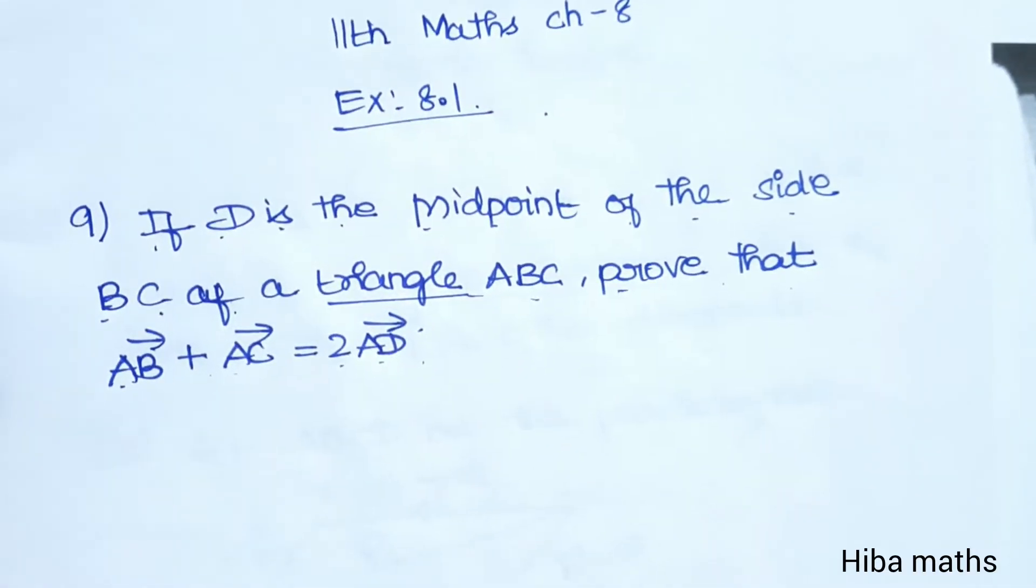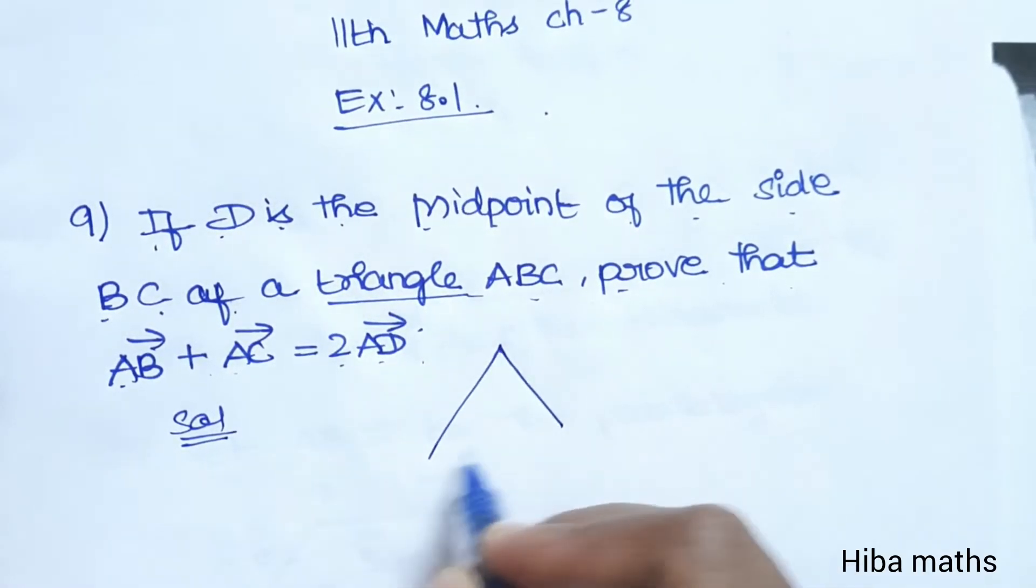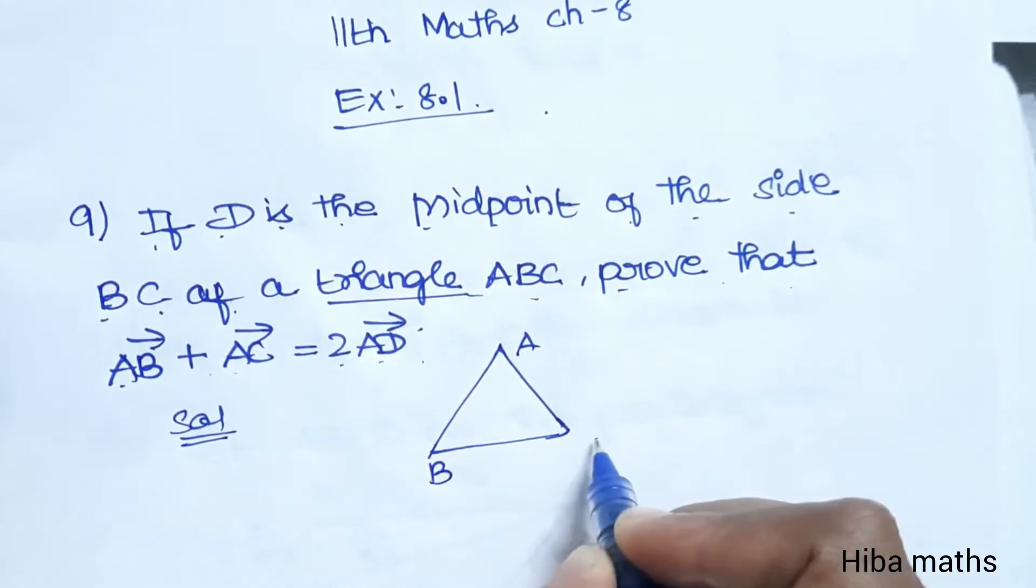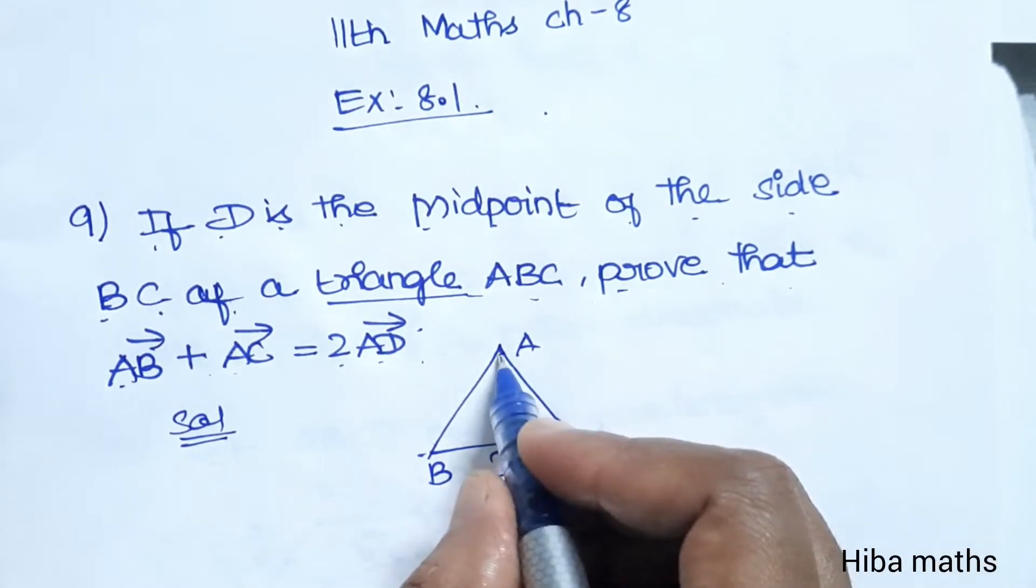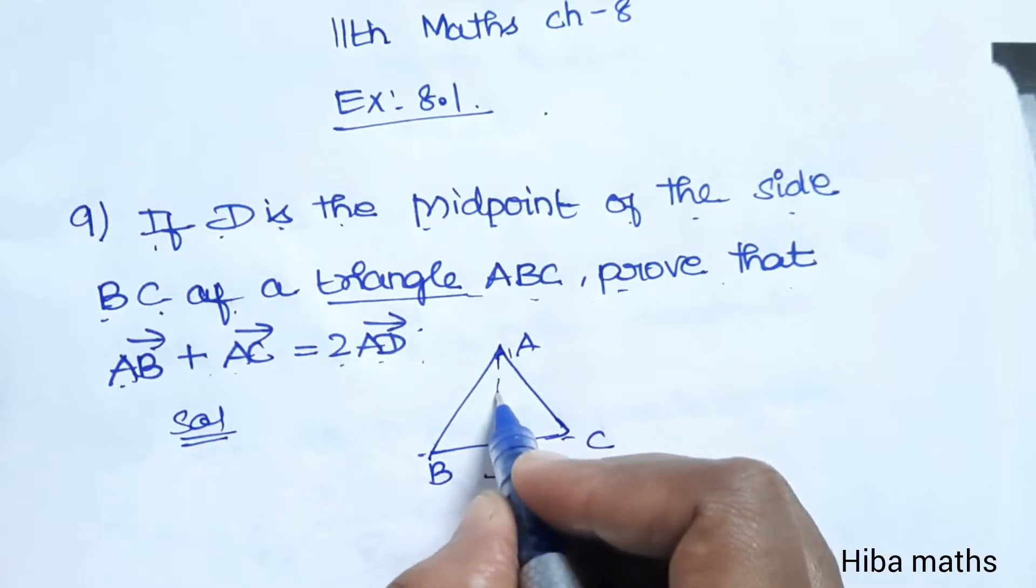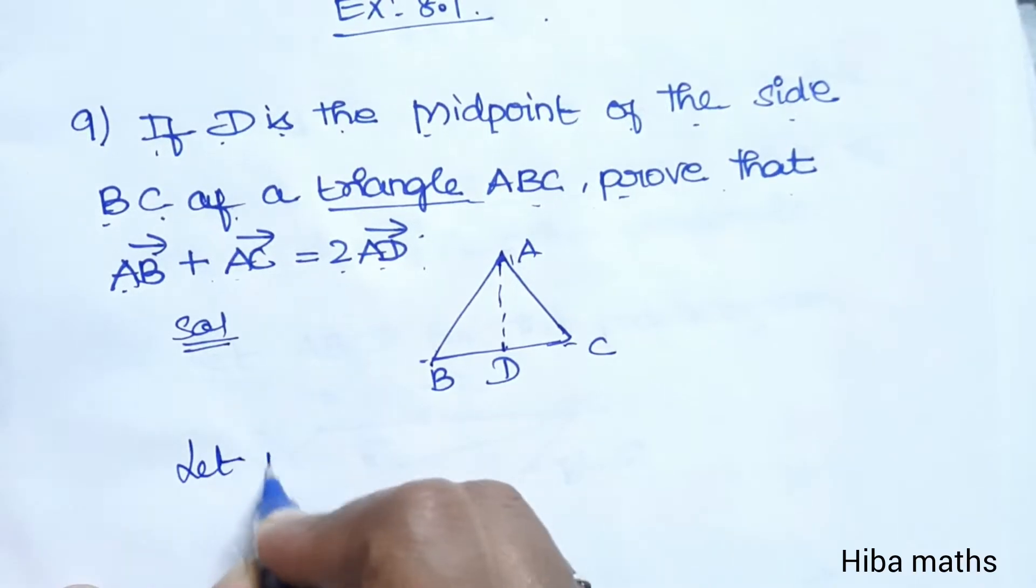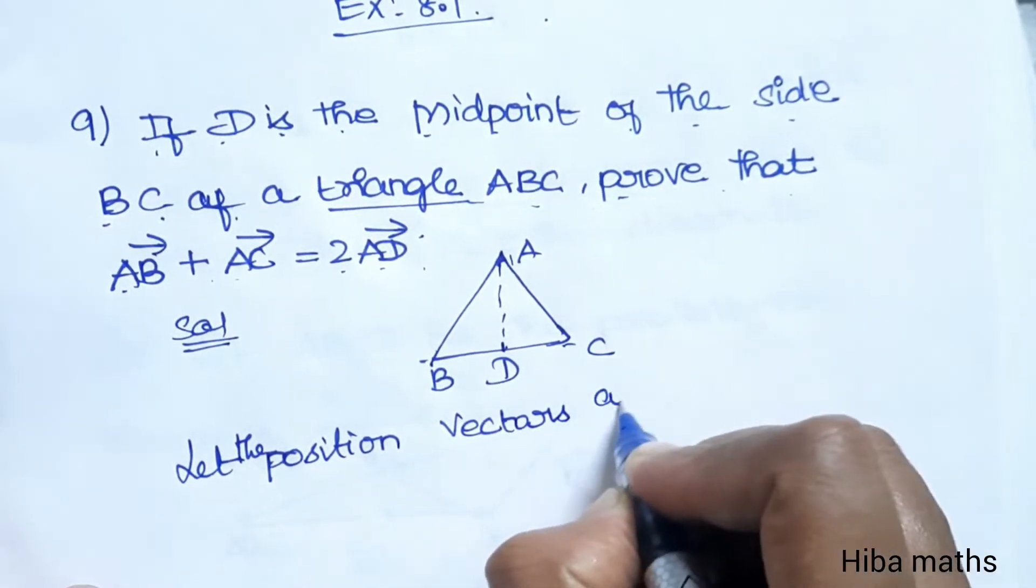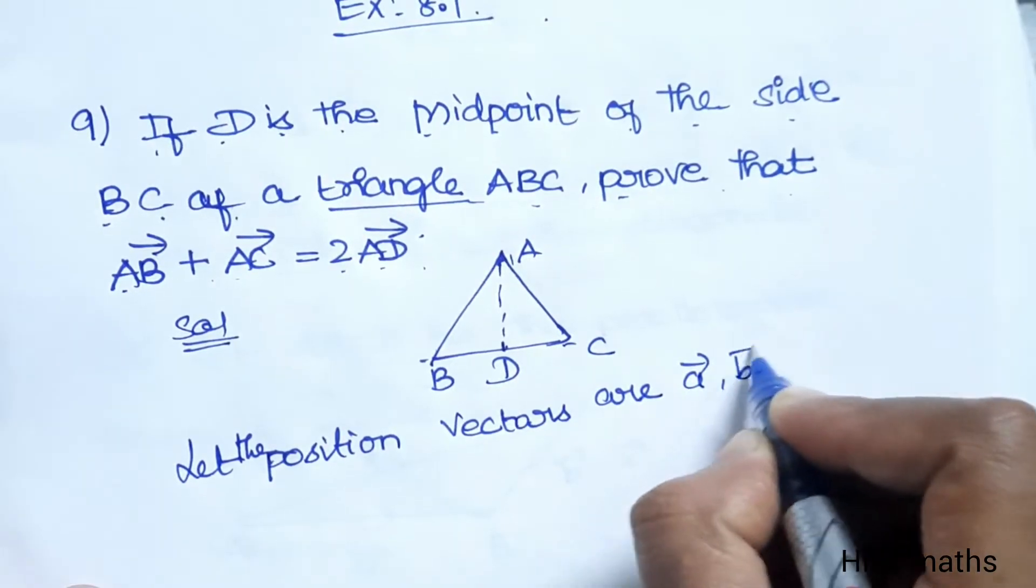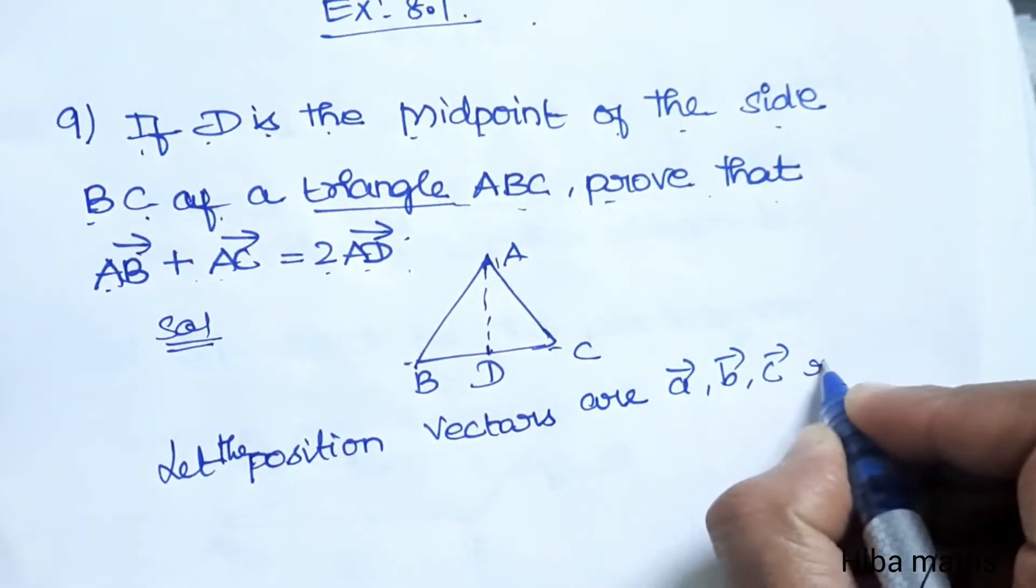Let me show you the diagram. In the solution there is a triangle ABC. D is the midpoint of BC. Now the condition to prove is: AB vector plus AC vector is equal to 2 times AD vector.